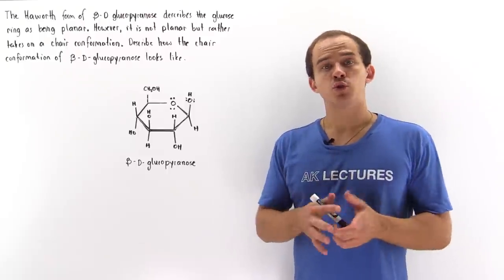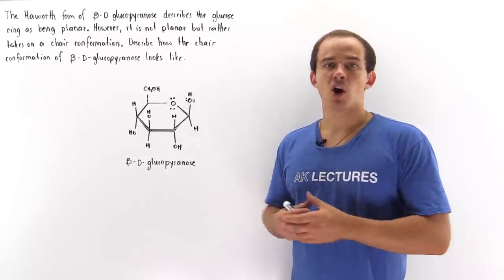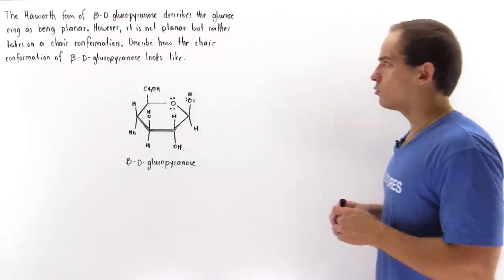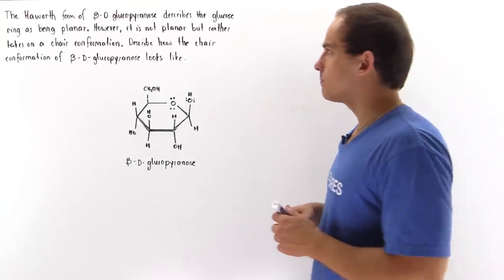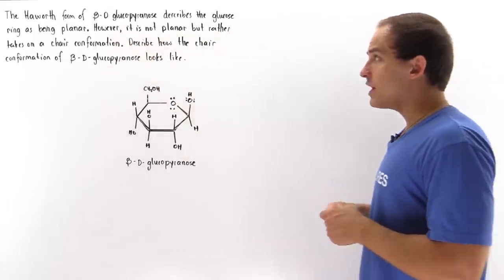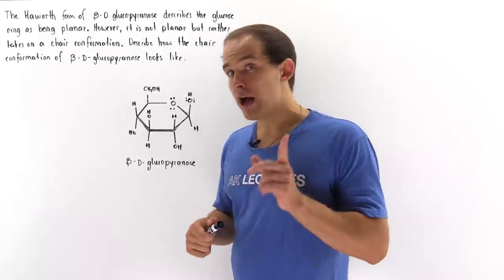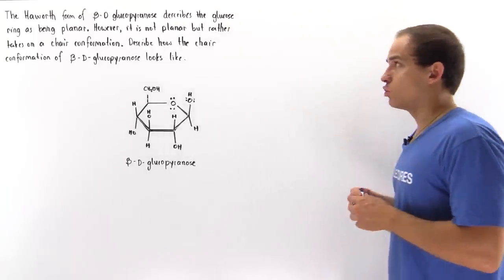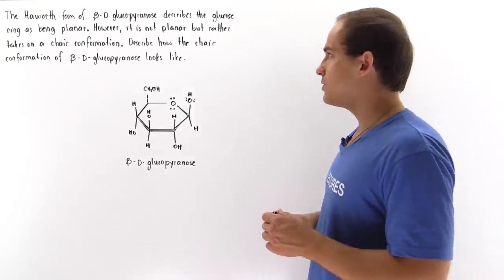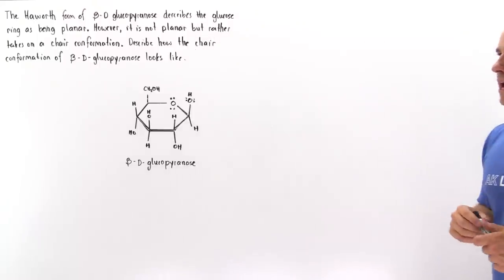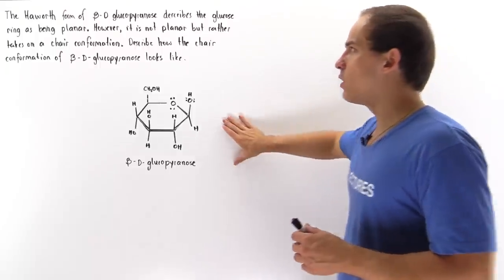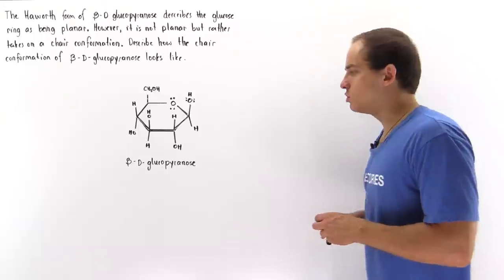Now that we discussed how to transform a straight chain carbohydrate into its ring counterpart, let's take a look at the following example. The Haworth form of beta-D glucopyranose describes the glucose ring as being a planar molecule. However, our molecule is not actually planar but rather takes on the chair conformation. Describe how the chair conformation of beta-D glucopyranose actually looks, beginning with the Haworth form of beta-D glucose.